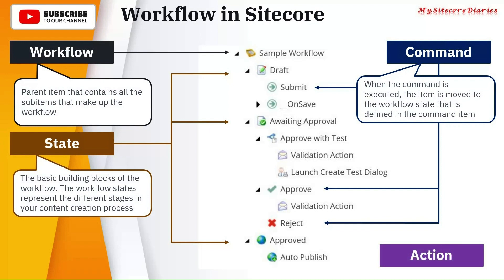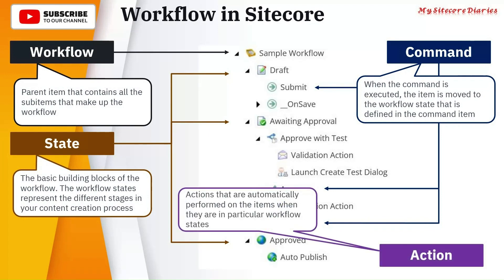Then you have actions. Actions are automatically performed on items when they enter a particular workflow state. For example, when content is moved to the Approved state, it should perform an auto-publish action. Similarly, you have different actions like Launch and Create Test Dialog — so when you reach the Approved state, it will launch and create a test dialog to start testing your content.